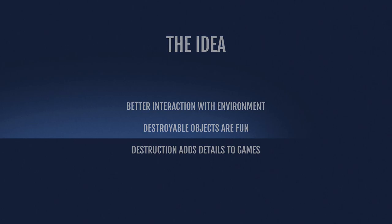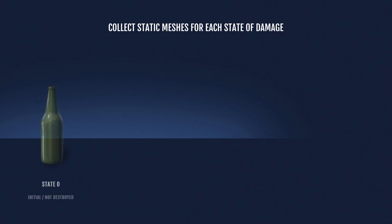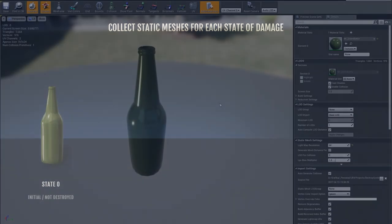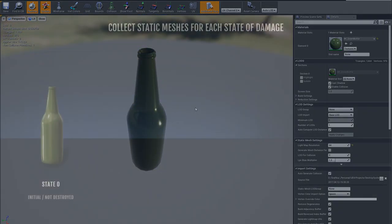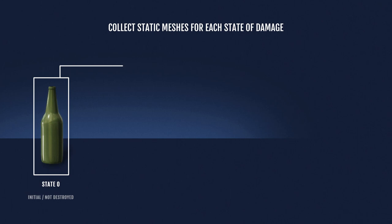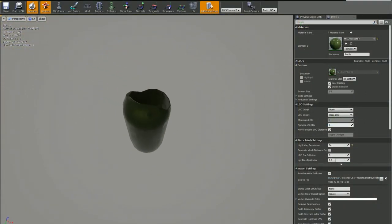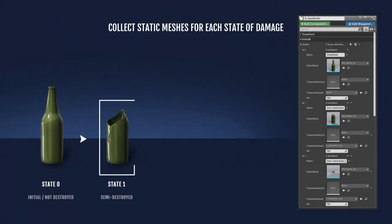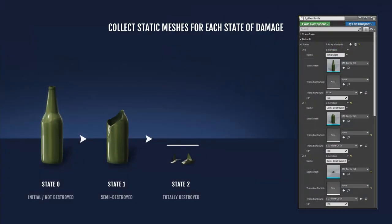Here's how it works. You start by collecting static meshes that represent an object's different states of damage. Let's take this bottle as an example. First state — think of it like a brand new object, not destroyed, untouched. Then the second state: partially or semi-destroyed. And finally, completely destroyed, where only small pieces are left.